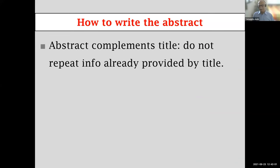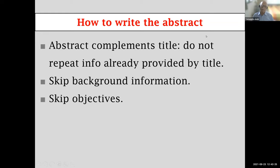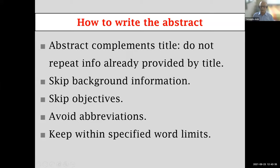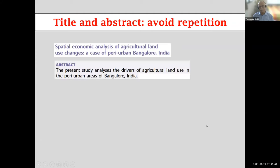Next comes the abstract. An important rule: do not repeat in the body of the abstract information that can be given by the title — this is a very common error. The abstract does not need background information, and you do not need to list objectives. Once you list your results, readers can infer your objectives. Background information belongs in the introduction. Make the abstract freestanding — generally avoid abbreviations and keep it within the word limit.